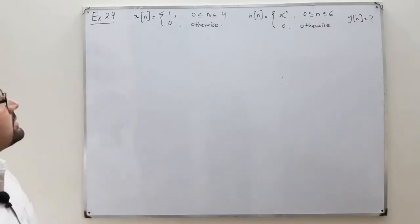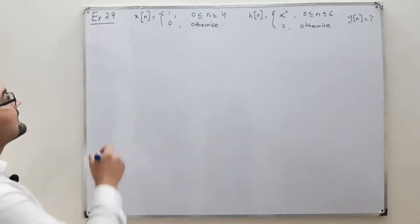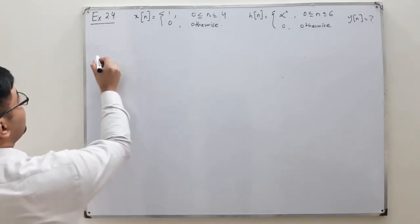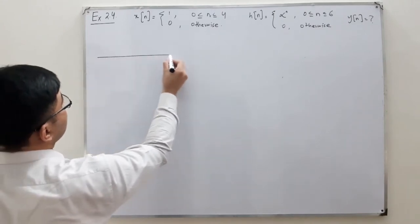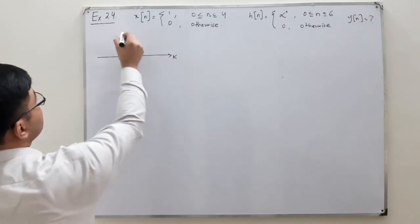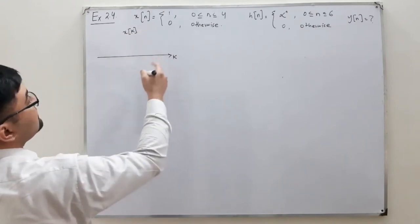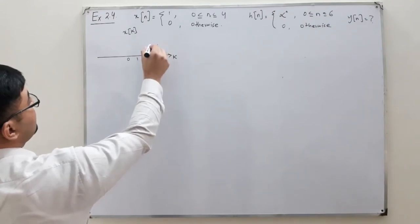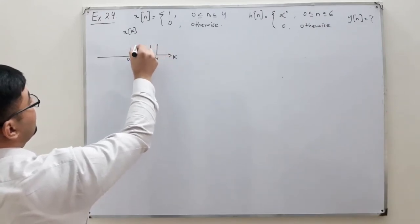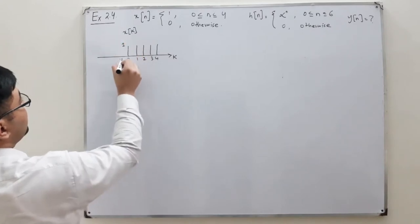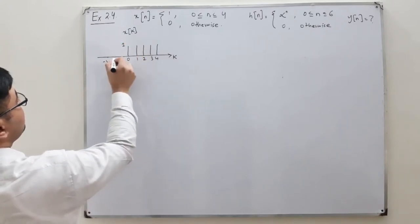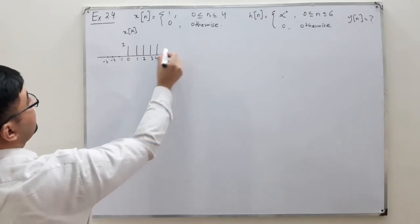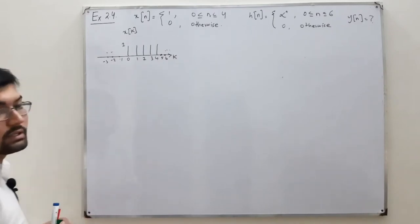You know the basic steps: x[n], we change it to x[k]. I would draw it with black color. If this is your k-axis, x[k] would be 1 from k = 0, 1, 2, 3, and 4. For minus 1, minus 2, minus 3, this is 0, and similarly for 5, 6 and beyond, this is also 0.